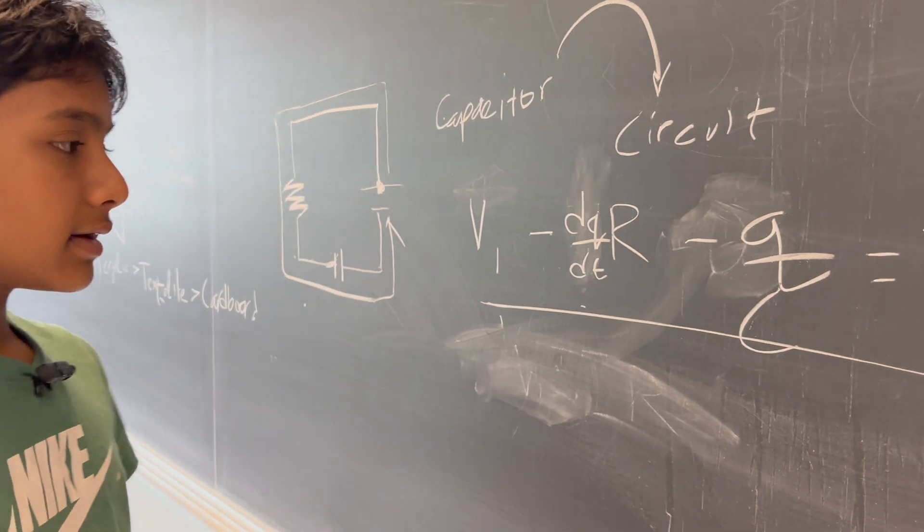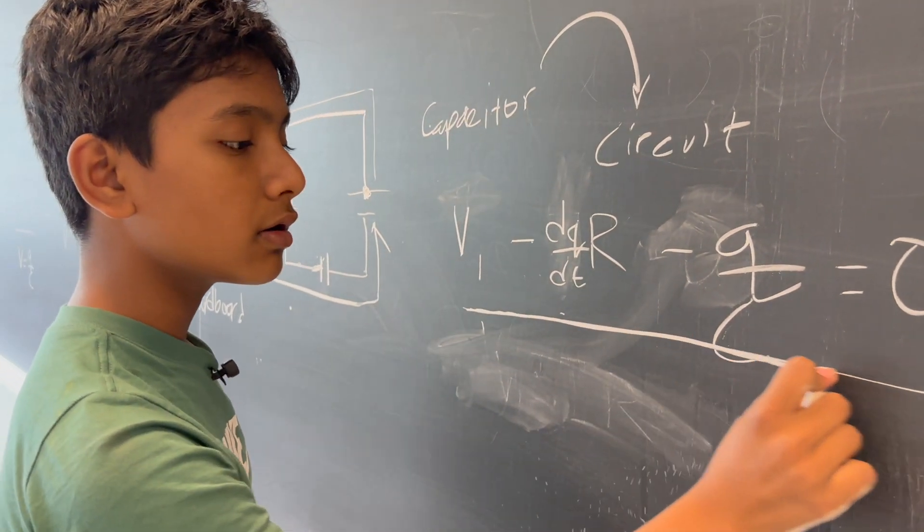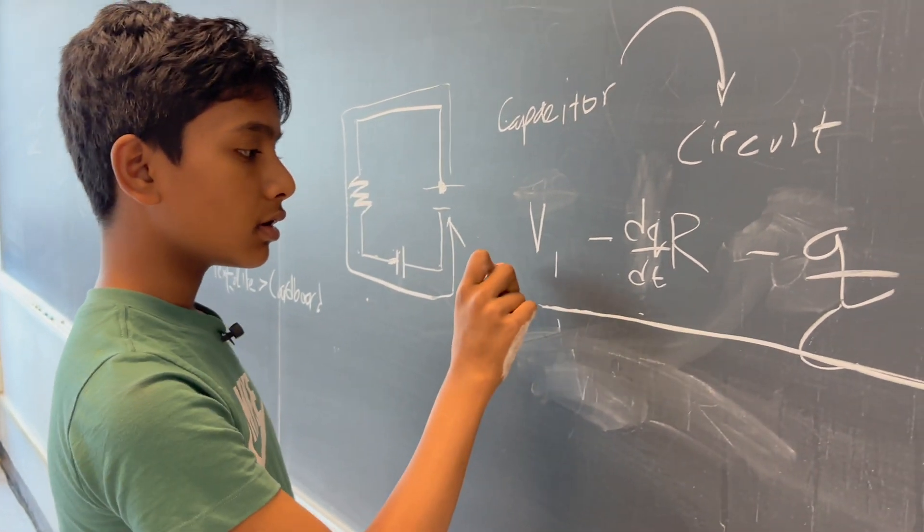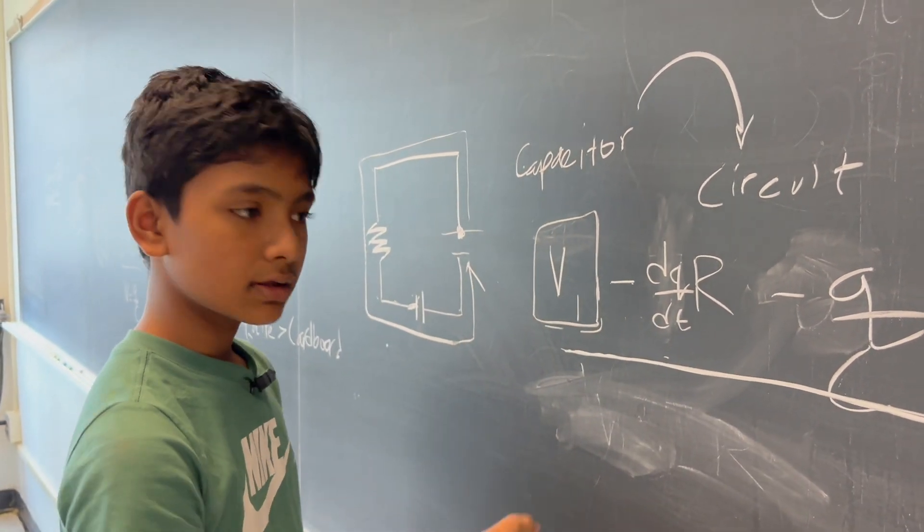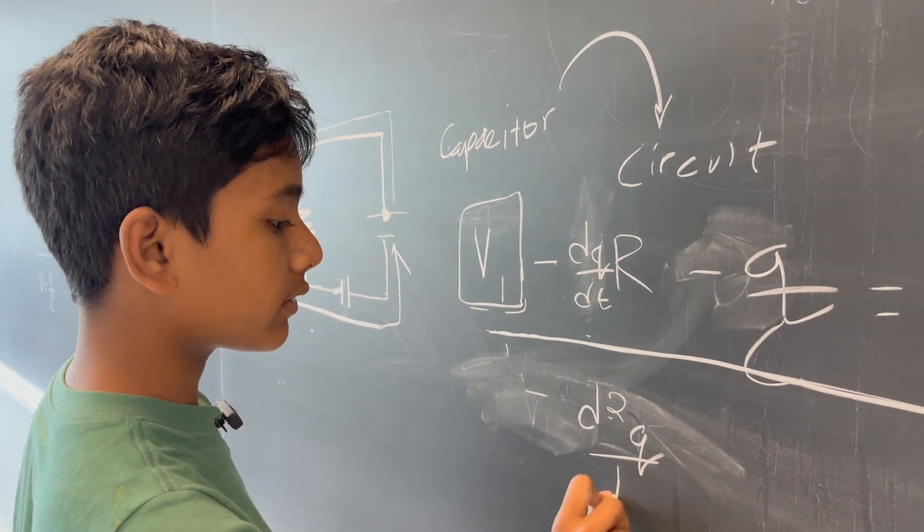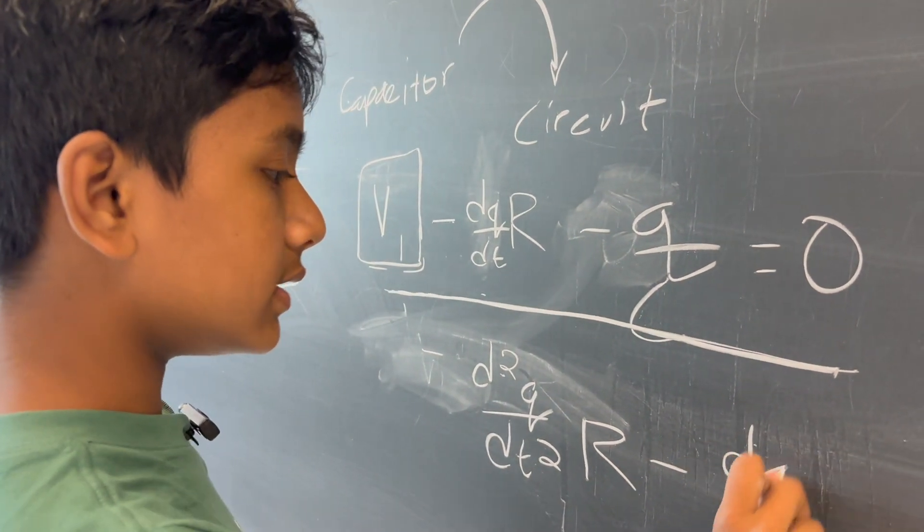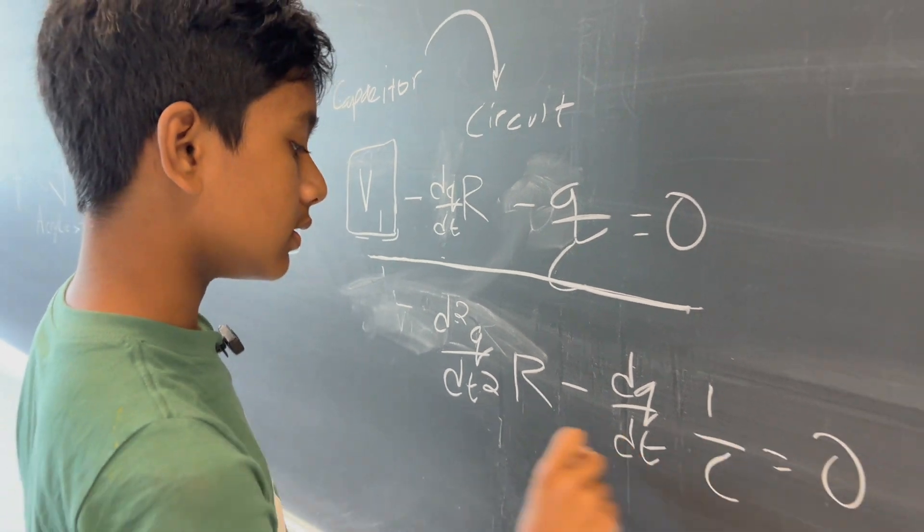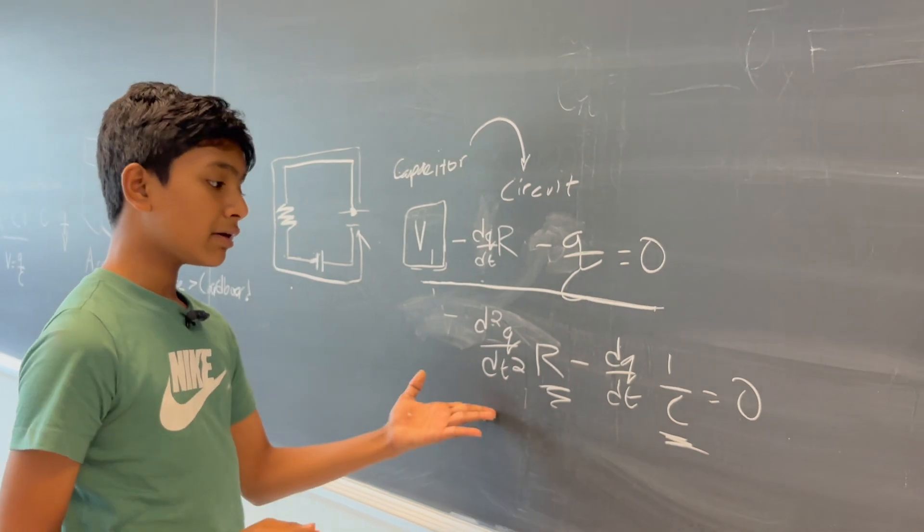Now, here's the thing. What happens when we take the derivative over time of this whole thing? Well, this initial thing is a constant. It's a scalar. That goes to zero. We get d squared Q over dt squared R minus dQ dt 1 over C is equal to zero. And we can ignore these because they're constants.